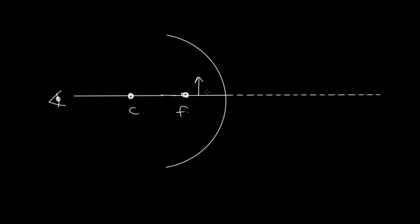We're going to use ray tracing to work out where the image for this object is. When doing ray tracing, we always trace two rays. The first ray is drawn parallel to the principal axis — from the top of the object parallel to the principal axis. When it is reflected off the mirror, the reflected ray goes through the focal point. We know that because that is how we found the focal point in the first place.